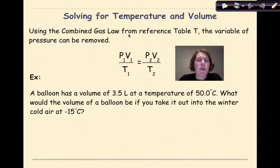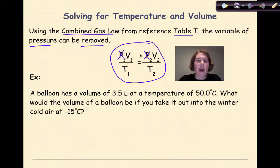Now let's do an example where we're solving for temperature and volume. Using the combined gas law from reference table T, the variable of pressure can be removed. So we have this relationship right here on reference table T. And what we want to do is remove the pressure variable, and then we'll have our relationship between volume and temperature. So let's look at this example.